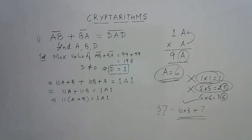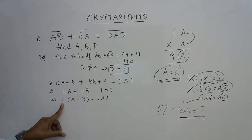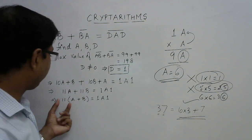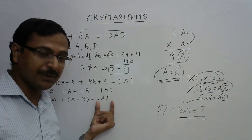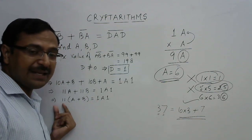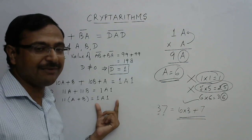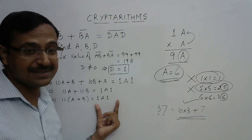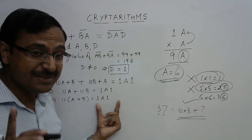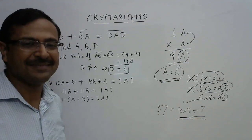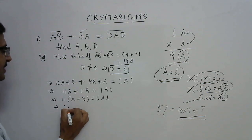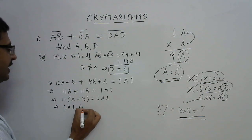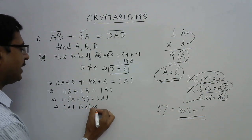On the left-hand side we have a common factor of 11, so 11(a+b) equals the three-digit number 1a1. This means 11 must be a factor of 1a1 — in other words, the three-digit number 1a1 must be divisible by 11.